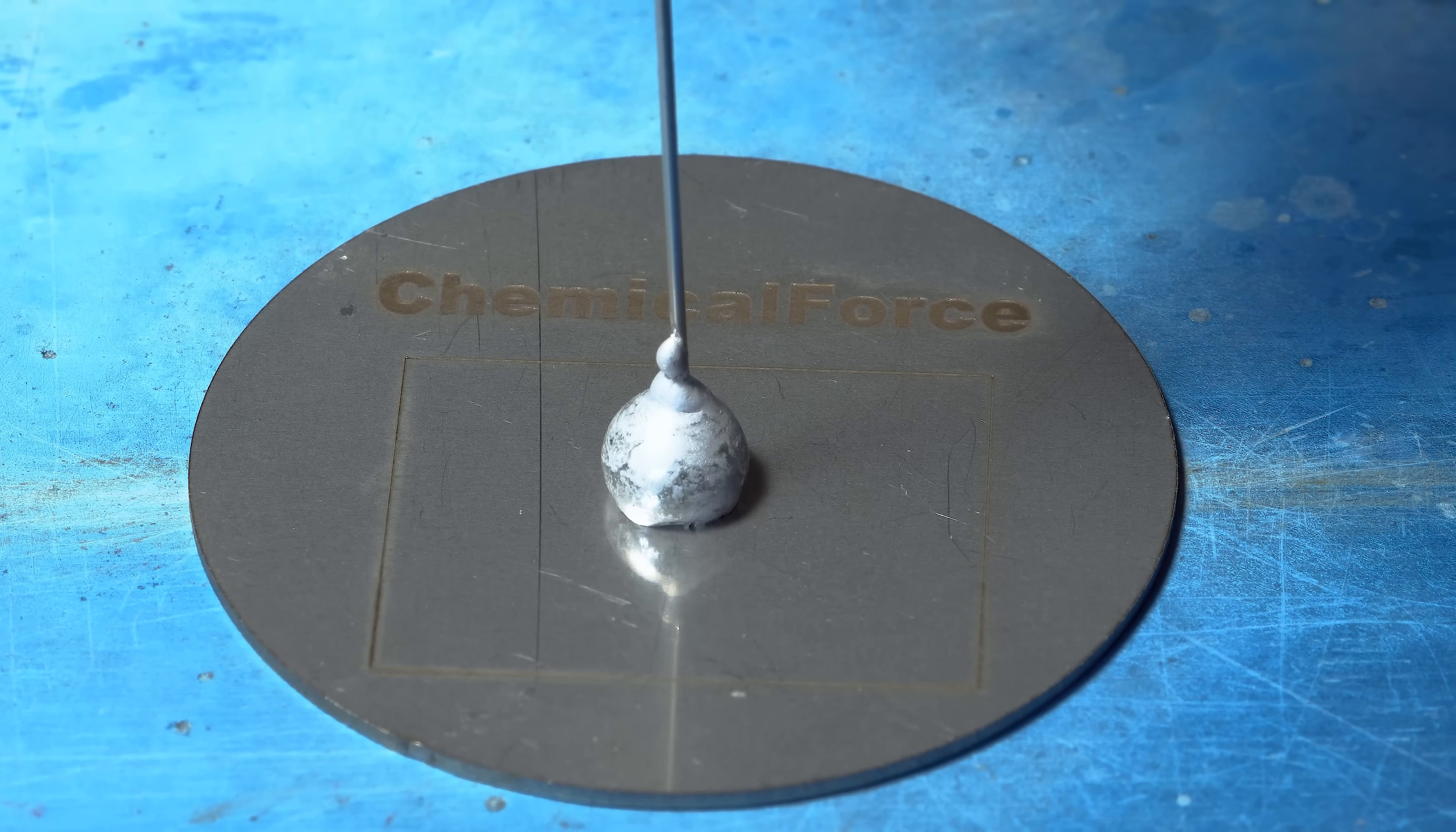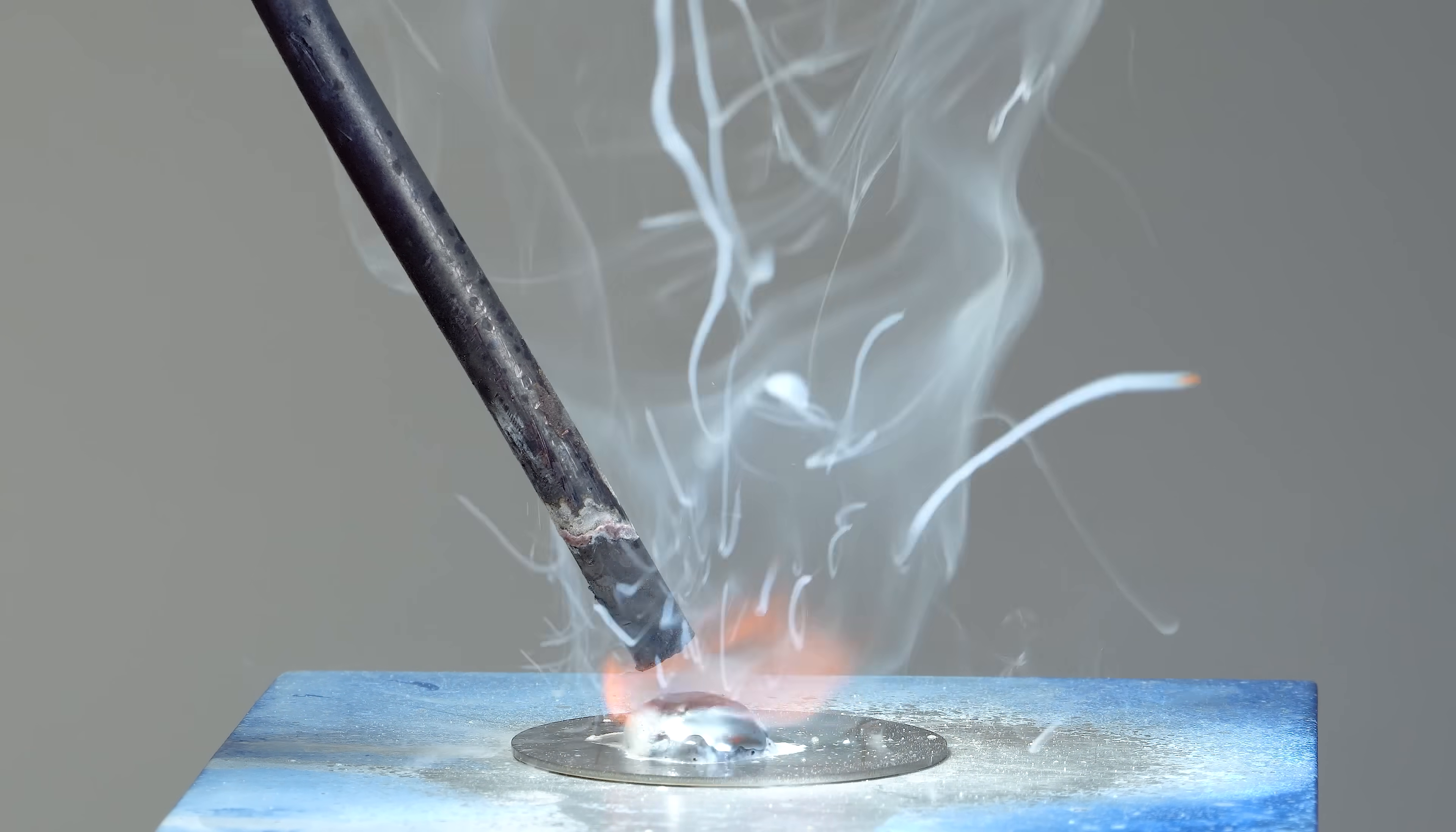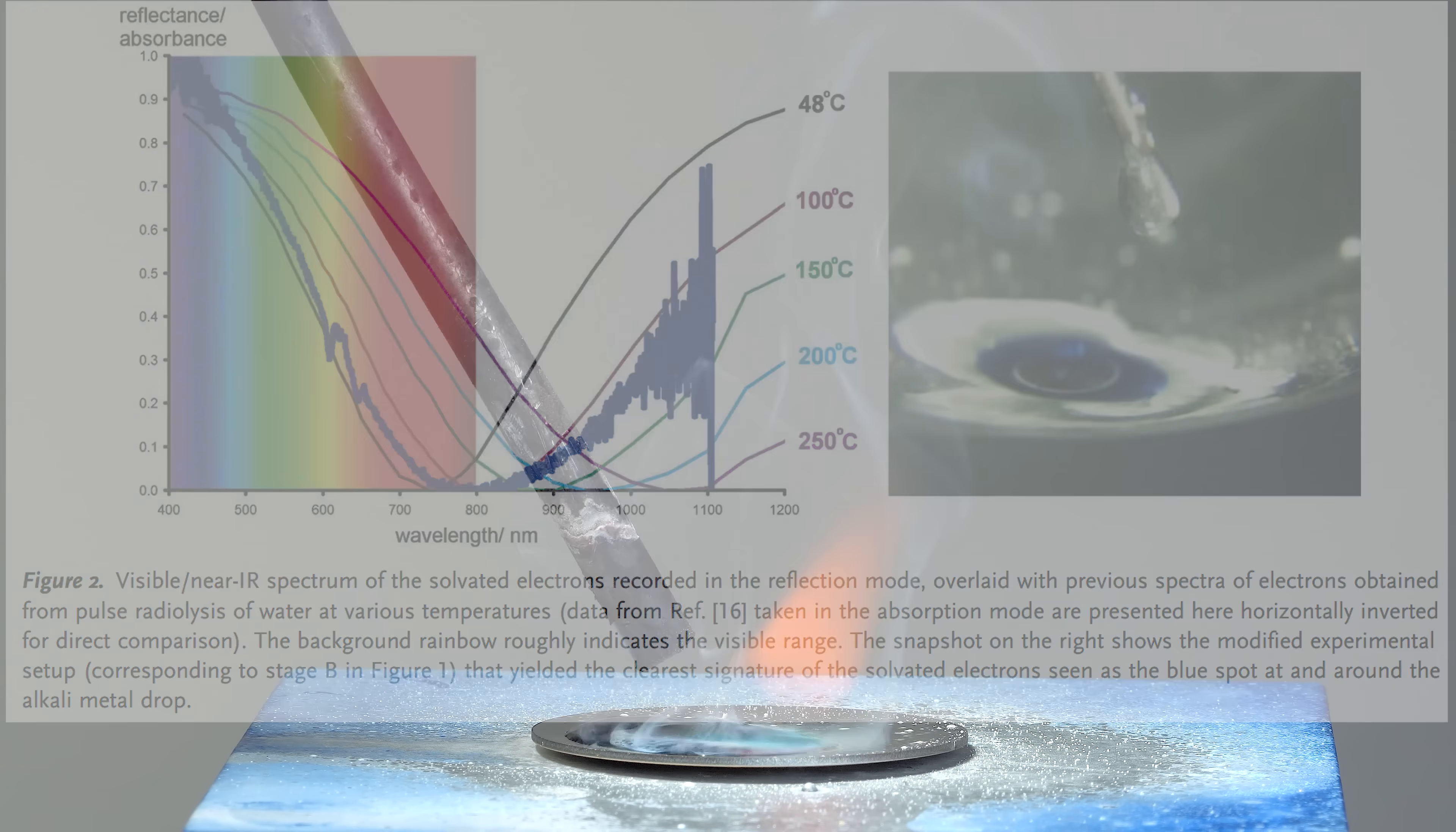When I put a sodium-potassium alloy into the superheated steam, it doesn't explode. However, you can clearly see dark blue areas forming on the drop. The referenced article provides spectroscopic evidence that the blue color, visible to the naked eye, is a result of electron solvation.